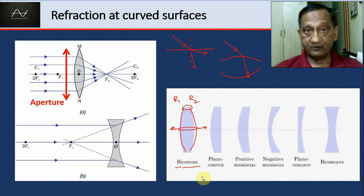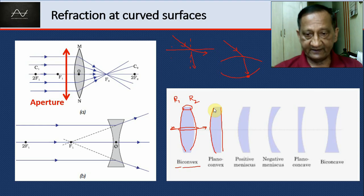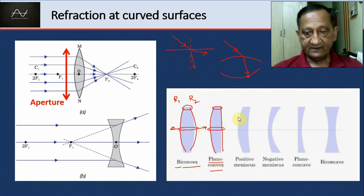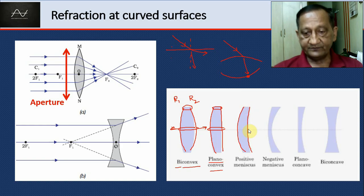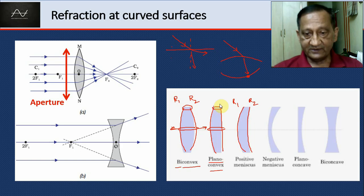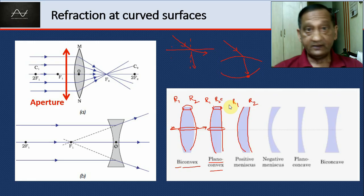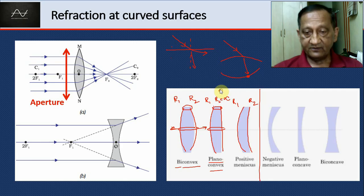We will call them a convex lens. This is also convex although one surface is plain and one surface is curved — it is again thicker at the middle and thinner at the end, called a plano-convex. This is also convex because it is thicker at the middle but both surfaces are curved with definitely different radii of curvature. What is the radius of curvature of a plane surface? For a plane surface, the radius of curvature is infinity. So all these three lenses are convex.